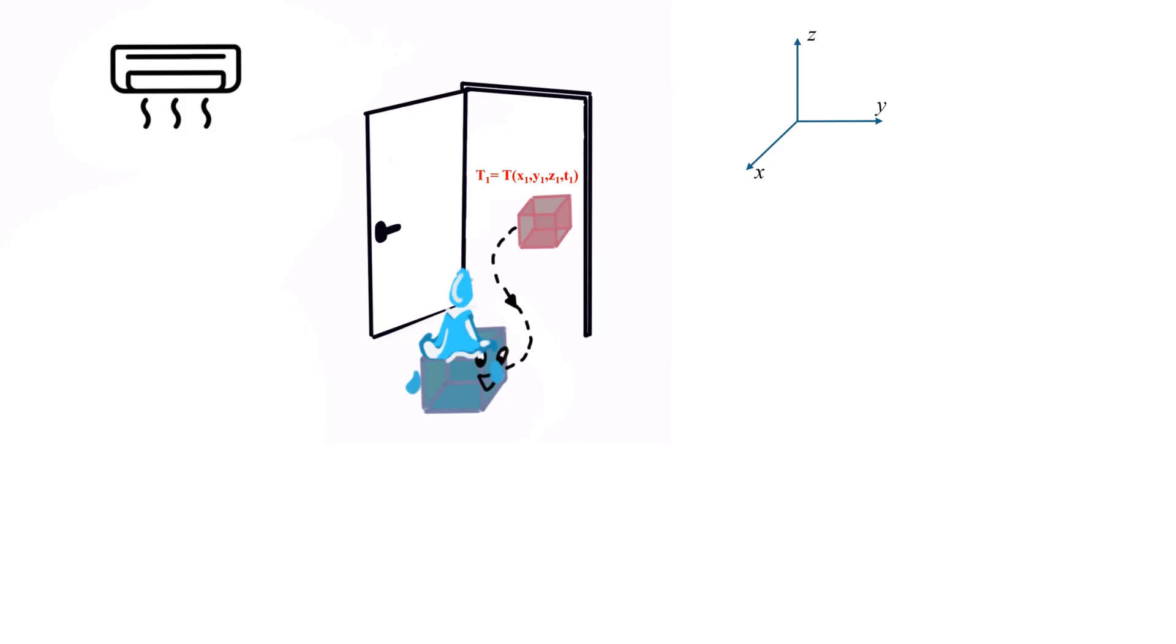As this parcel moves into a cooler air-conditioned room, it arrives at a new position X2, Y2, Z2 at a later time T2, where its temperature changes to T2. We can express the final temperature T2 of this air parcel based on its initial temperature T1 using the Taylor series.